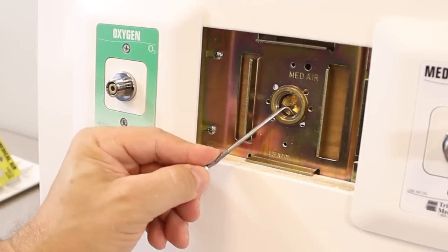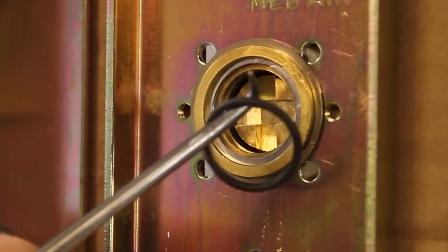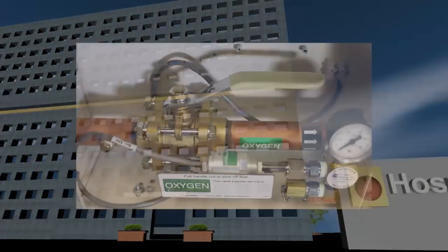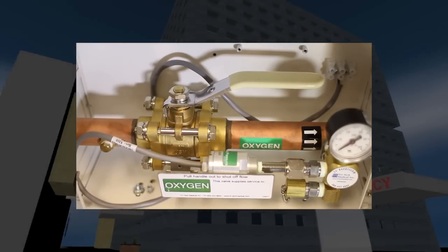To maintain a Tritec outlet, simply remove the outlet front and replace the O-rings. The gas system does not need to be shut down.